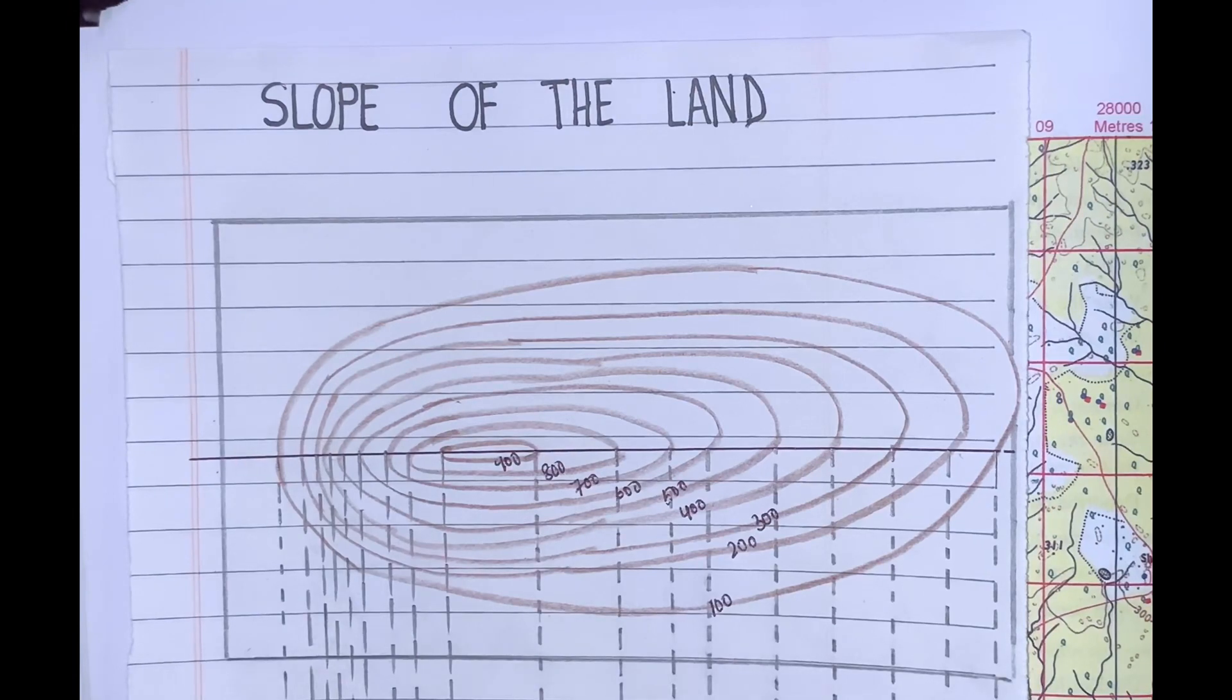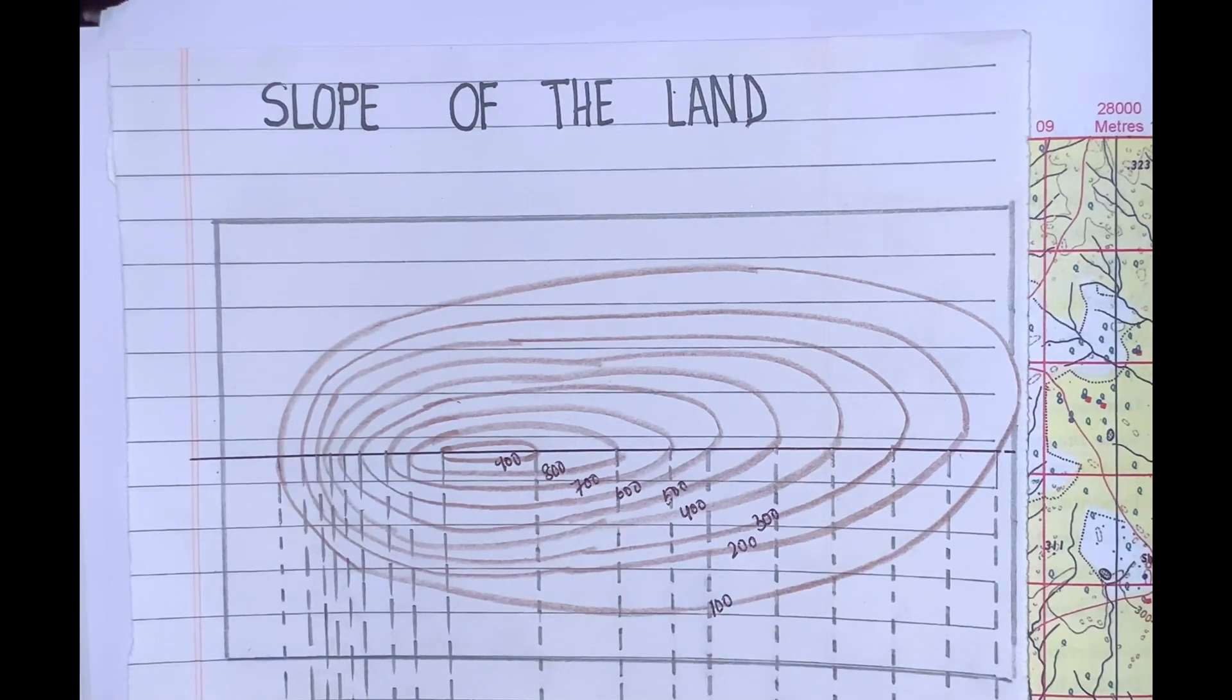I'm sure the contours topic is clear to all of you. Don't miss out my next video in which I'll explain identification of landforms such as conical hill, ridge, cliff, and V-shaped valley by contours. Thank you.